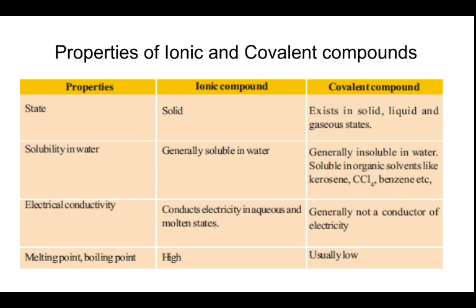Third, electrical conductivity: ionic compounds conduct electricity in aqueous and molten states, while covalent compounds are generally not conductors of electricity. Fourth, melting point and boiling point: ionic compounds have high values of melting point and boiling point, while covalent compounds usually have low values.